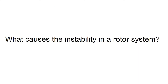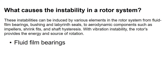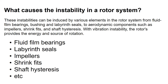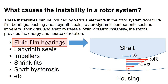The first thing we should understand is what causes the instability in a rotor system, which leads to large vibration in the machine. Instabilities can be induced by various energy sources such as bearings, seals, impellers, fit between the parts, shaft hysteresis, etc. There are many factors that can cause rotor dynamic instability, but for today's video let's focus on the instability caused by fluid film bearings.